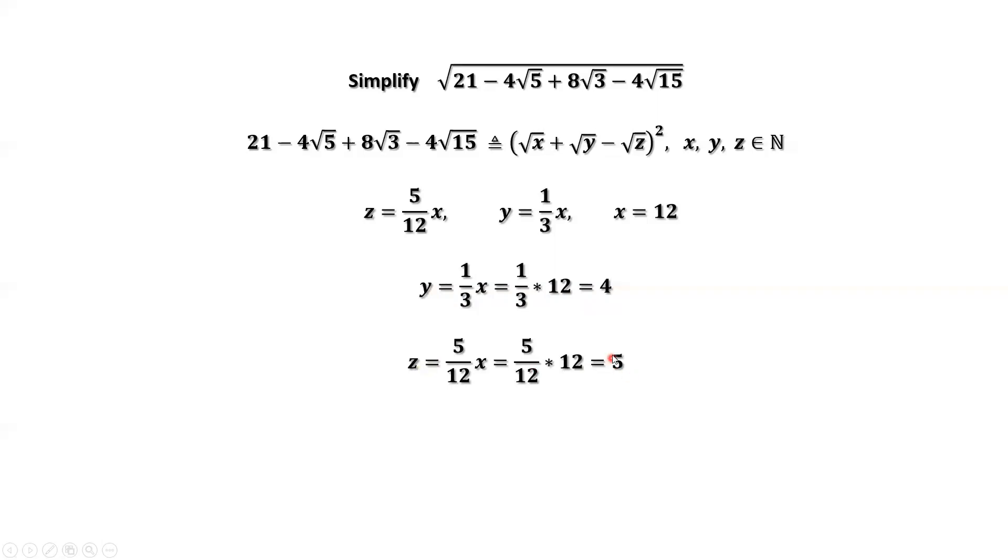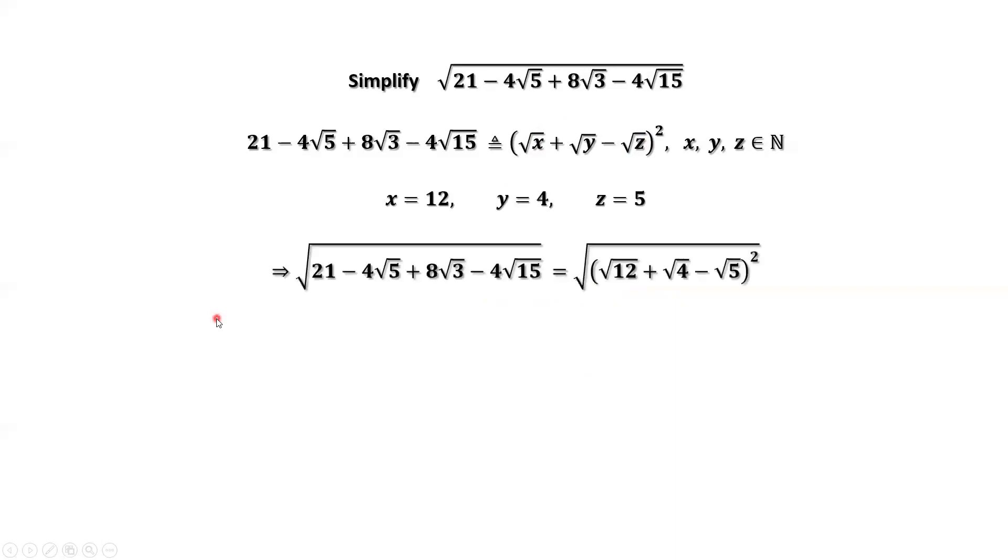We can replace x, y, z by these three values back into this right-hand side. Here, that's a square, and the square root, we can cancel each other.